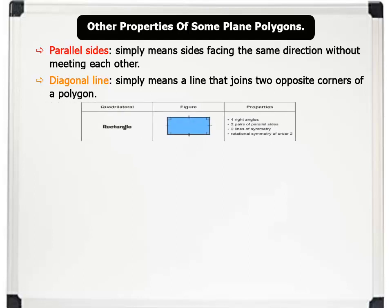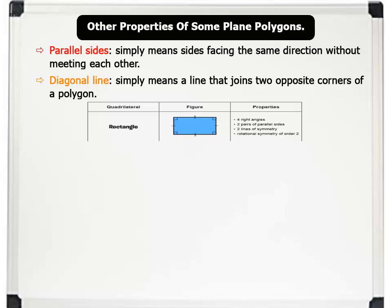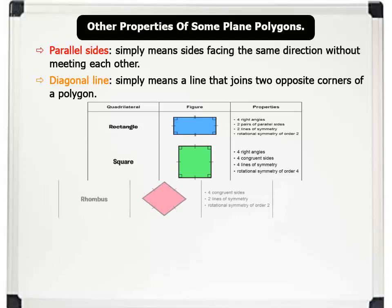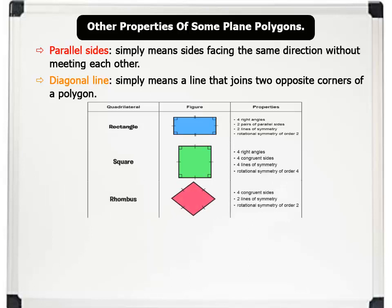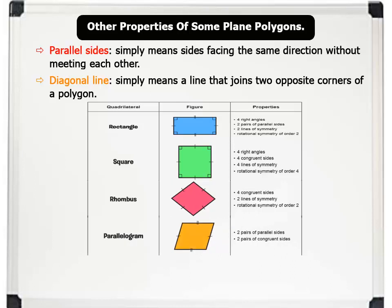Now let us see properties of some plane shapes. For a rectangle, opposite sides are equal and parallel, all angles are right angles, and diagonal lines bisect each other. For a square, opposite sides are equal and parallel, all sides are equal, and all angles are right angles. For a rhombus, all sides are equal and diagonal lines divide each other at right angles. For a parallelogram, opposite sides are equal and parallel, opposite angles are also equal, and each diagonal line bisects the shape into two congruent triangles.